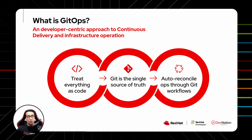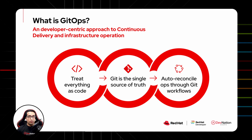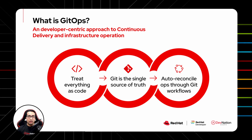This includes how infrastructure looks like, how applications should be deployed, and how it should be configured across environments. In GitOps, a Git repository is a single source of truth. The state of infrastructure and applications are stored in Git version control, and provisioning or deployments are performed through familiar Git workflows.